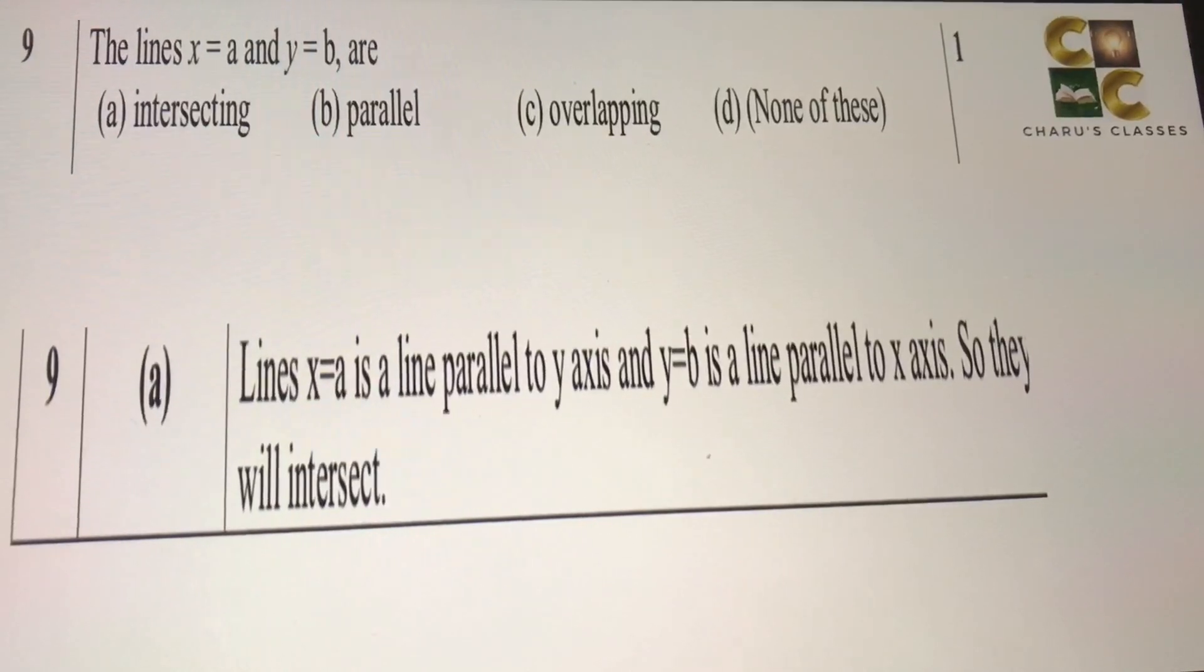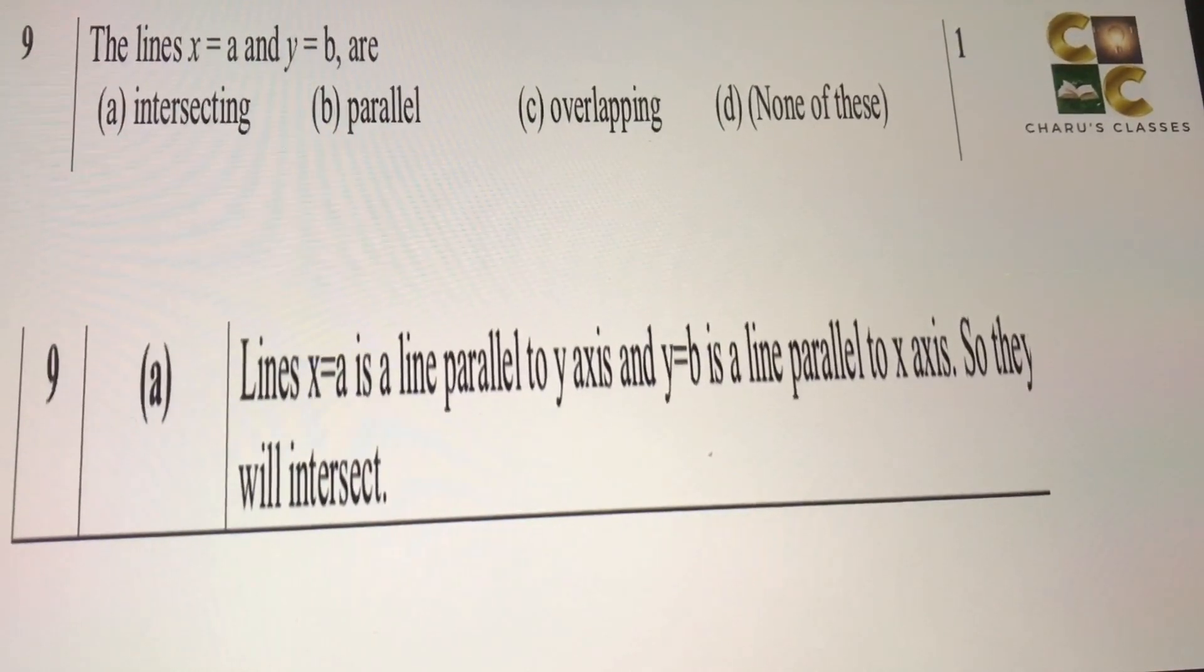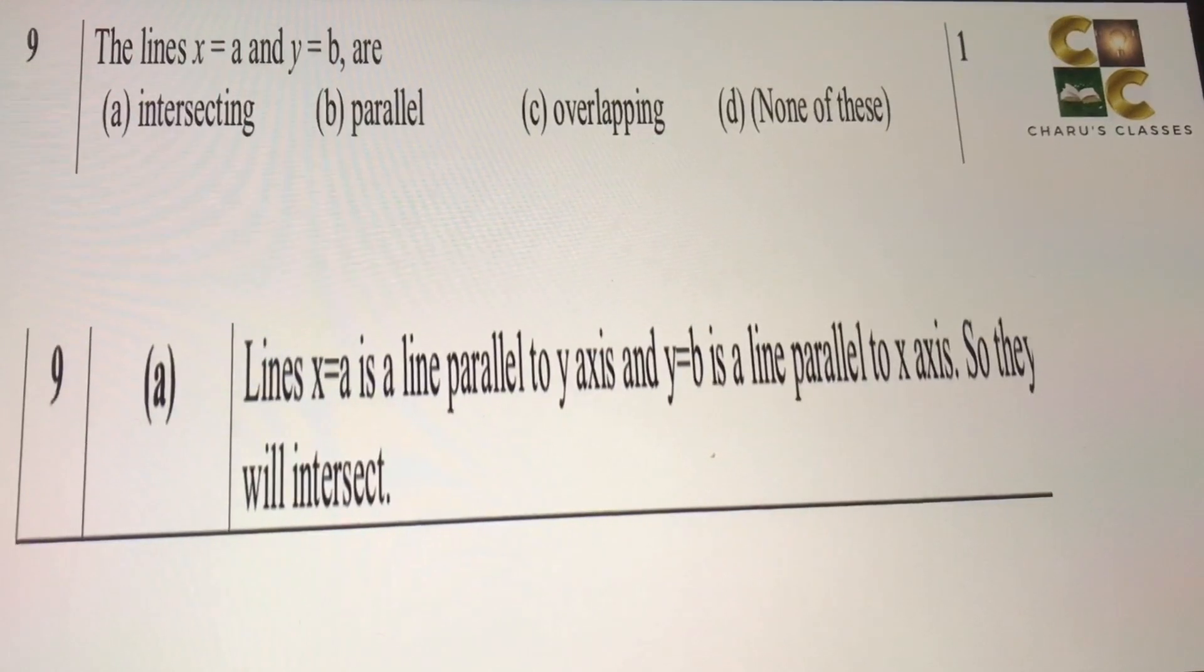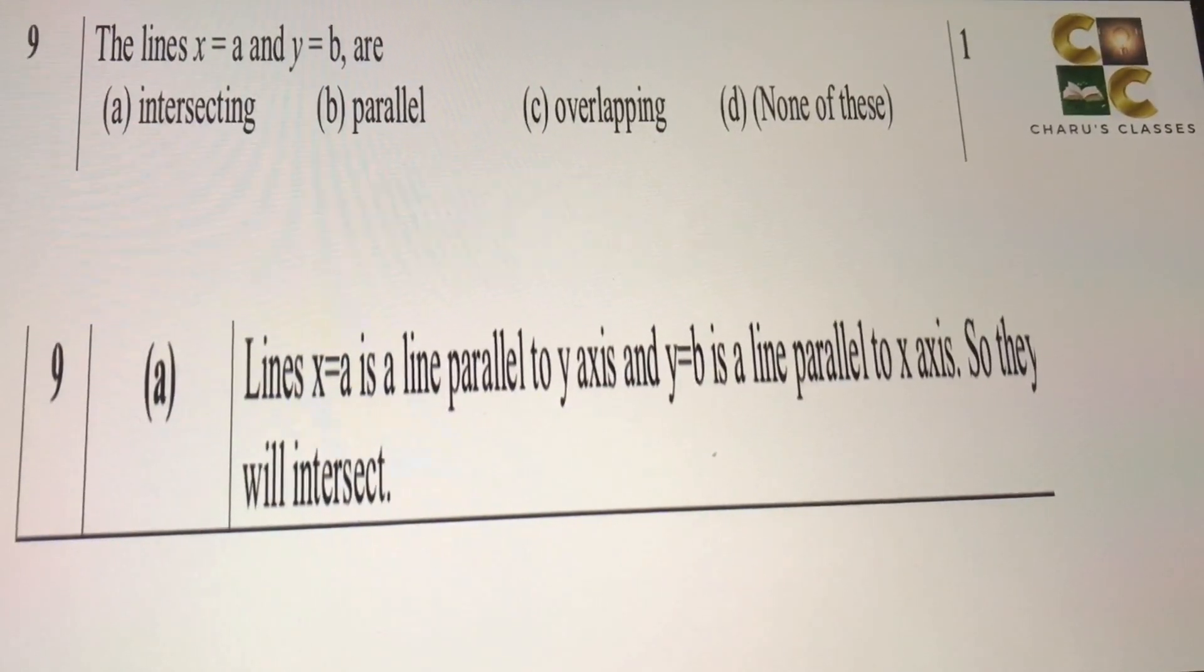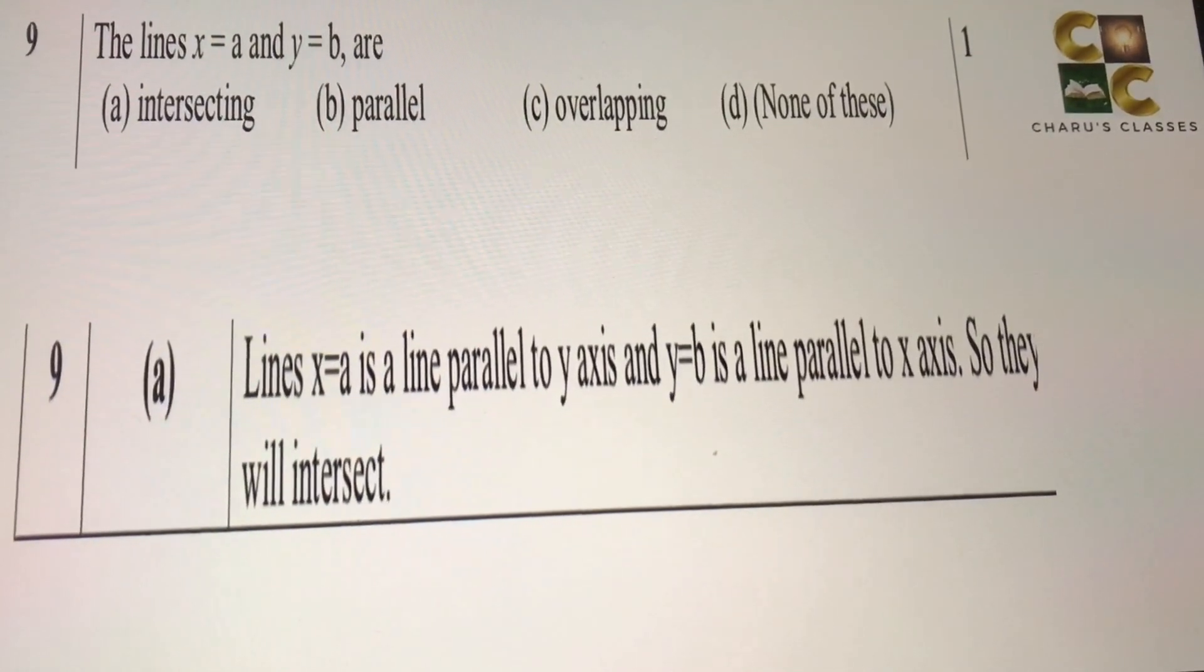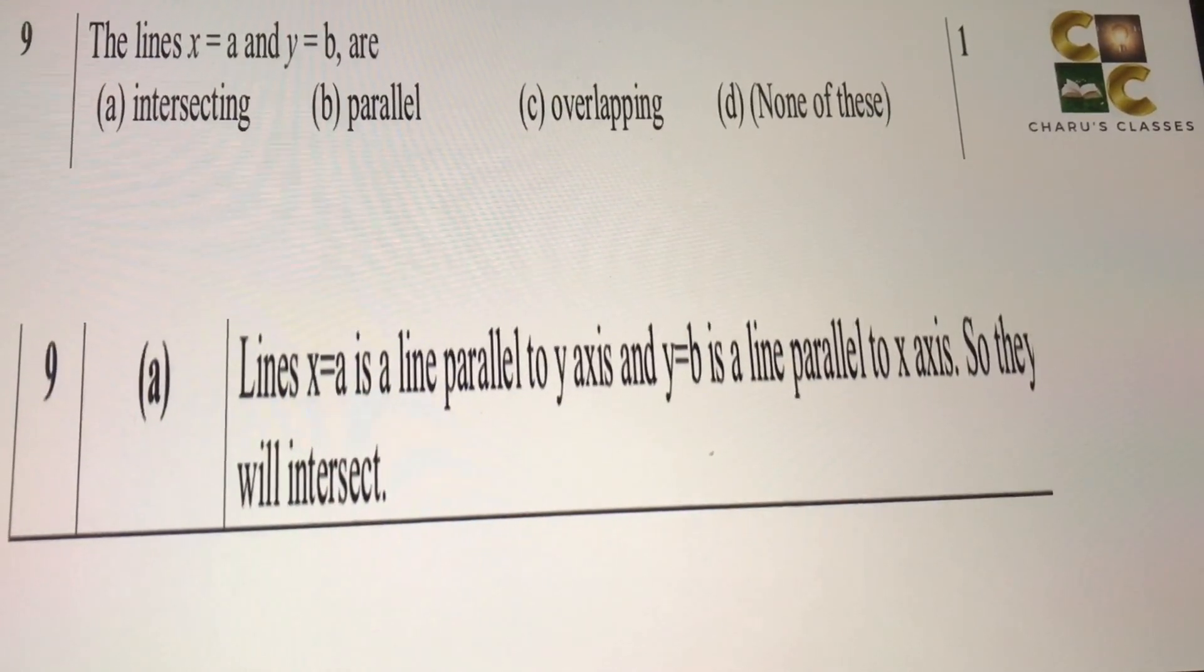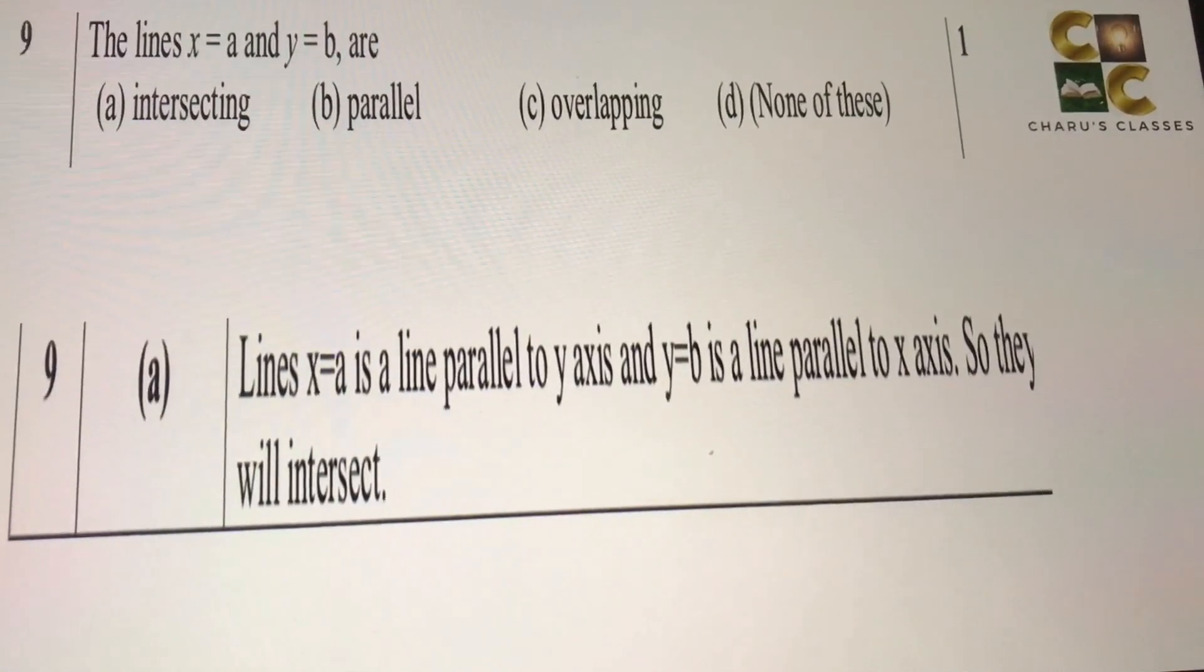Ninth question: The lines x = a and y = b are. So x = a, that means its y component is zero. So this line will be parallel to y axis. And y = b means its x component, basically y = b which is a line, is parallel to x axis. So if one line is parallel to x axis, and one line is parallel to y axis, they will intersect. So A will be the correct answer.